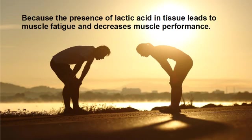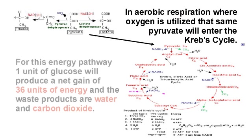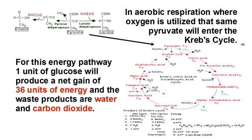Because the presence of lactic acid in tissue leads to muscle fatigue and decreases muscle performance. However, in aerobic respiration, where oxygen is utilized, that same pyruvate will enter the Krebs cycle. For this energy pathway, one unit of glucose will produce a net gain of 36 units of energy, and the waste products are water and carbon dioxide.